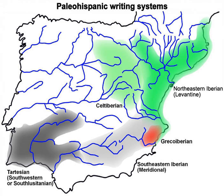Like one variant of the northeastern Iberian script, the western variant of Celtiberian shows evidence of having allowed the voiced stops G and D to be differentiated from their respective voiceless counterparts, K and T, by adding a stroke to the voiceless signs. This is known as the dual system in Paleo-Hispanic scripts, which otherwise do not distinguish between pairs of voiceless and voiced stops.